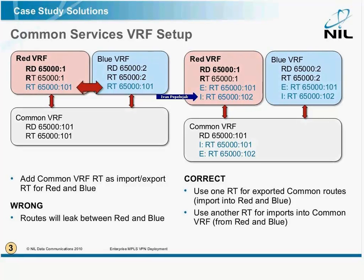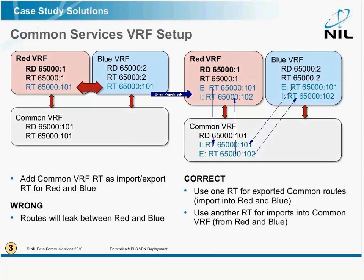The export from red to common guarantees that common will see the red routes. Same — common will see the blue routes. And because we export from common but import in red, red will see the common routes, and so also blue will see the common routes. The import-export is not transitive, so what gets into the common VRF will not leak over into the red VRF or vice versa. We keep the separation between red and blue, but common can see them both and they can both see common.